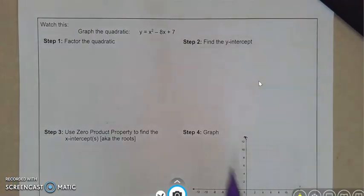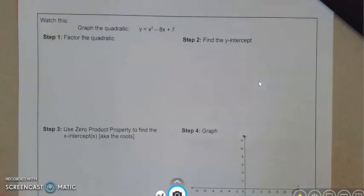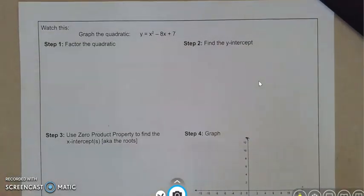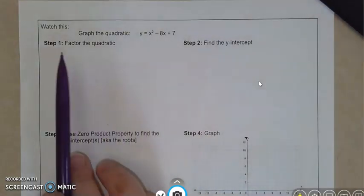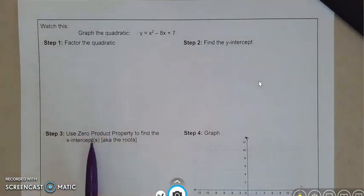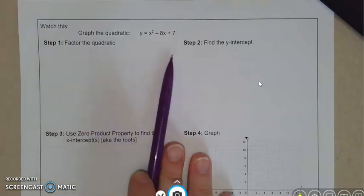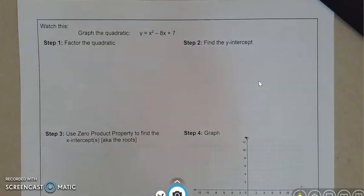All right, in this video we're going to learn how to graph a quadratic and we're going to use something called the zero product property to help us do that. The first thing we're going to need to do before we can even use the zero product property is we're going to need to factor the quadratic.